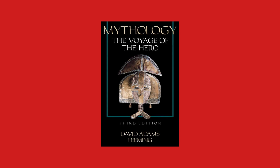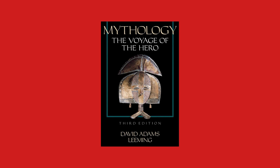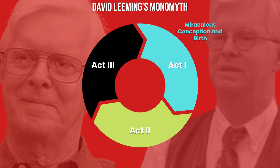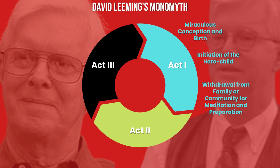Another version of the hero's journey was made by American philologist David Adams Leeming in his book Mythology: The Voyage of the Hero, originally published in 1973 with significant changes in 1981. Act 1 begins with the miraculous conception and birth, where the hero is conceived or born under unusual or extreme circumstances. Stage two is the initiation of the hero child, where the hero as a child begins to learn about forces infinitely larger than themselves, facing and overcoming obstacles with outside assistance. The last stage in Act 1 is the withdrawal from family or community for meditation and preparation, where the hero detaches their idea of self to find their true self — resisting worldly temptations and sinful ideas.